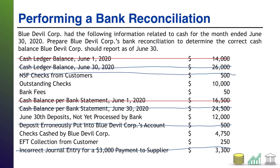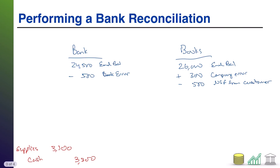Next up: outstanding checks. In this problem, I've given you the outstanding checks as $10,000. An outstanding check is where the company knows it wrote a check, but the bank has not processed it yet. Therefore, the bank doesn't know that money is leaving the account. On the bank reconciliation, we subtract $10,000 from the bank side — outstanding checks — because that money will come out of the bank balance eventually, the bank simply hasn't processed it yet.